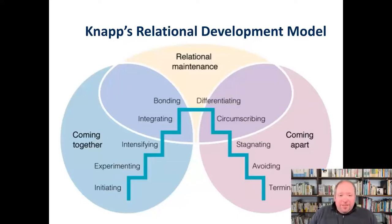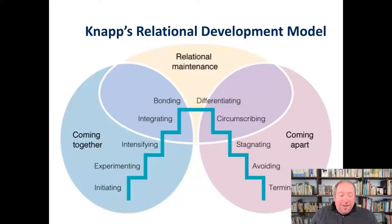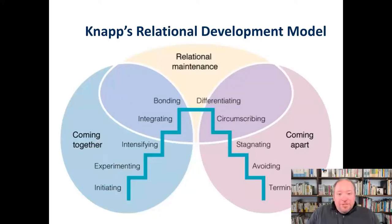In the initiating phase — really before you even have a conversation with somebody — if they don't look like someone you're interested in or they're behaving in a way that's not attractive to you, you're probably not going to get past the initiating stage. Or sometimes you see somebody who seems interesting and you start to experiment by having a conversation: where are you from, what do you do? If things aren't lining up, maybe you end the relationship there.